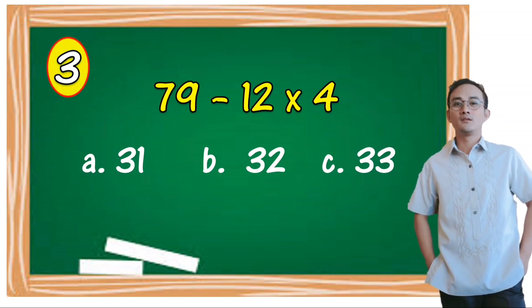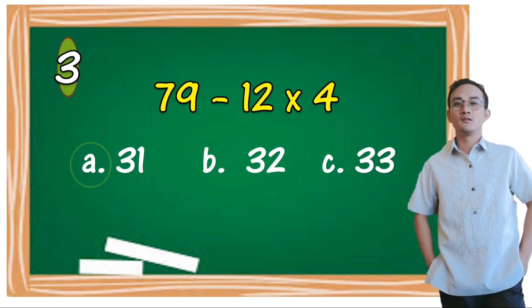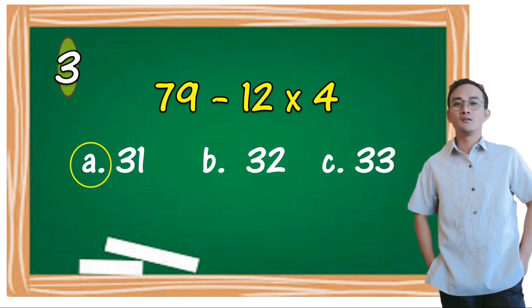79 minus 12 times 4. A) 31, B) 32, C) 33. The correct answer is A, 31.